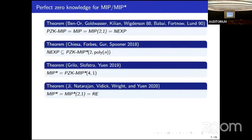After the introduction of MIP star in 2018, Giza, Forbes, Gurren, and Spooner showed that all of NEXP, and thus all of MIP, is contained in perfect zero knowledge MIP star with two provers and polynomially many rounds of interaction. So anything that can be proved in the classical case can also be proved with perfect zero knowledge in the quantum case. Then in 2019, Grealish, Slofstra, and Ewan showed that MIP star can be made perfect zero knowledge with four provers in one round of interaction.